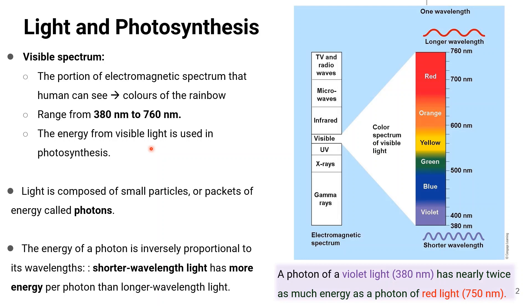The light used in photosynthesis is composed of small particles or packets of energy called photons. Since it is visible light, we normally see it as rainbow colors.